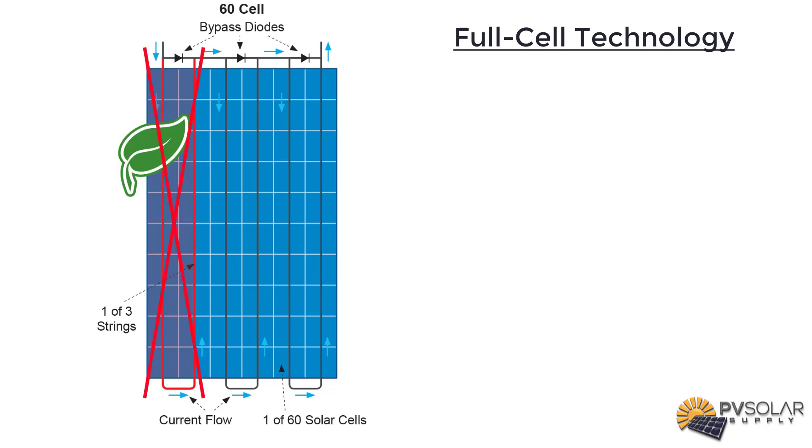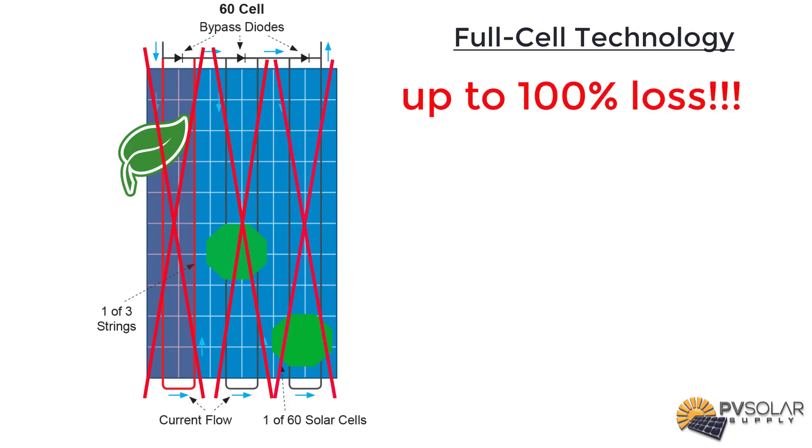With a little bit of shading on a standard module, the whole string of 20 cells is affected, which is 30% of the panel. With a little more shading, 60% or even up to 100% is affected by the shading, which means there's zero output.